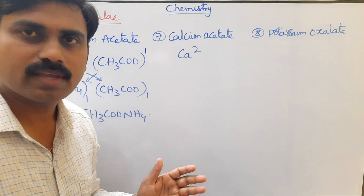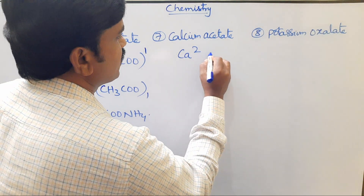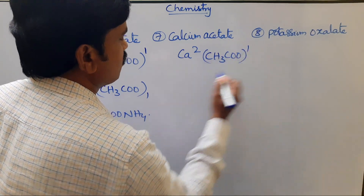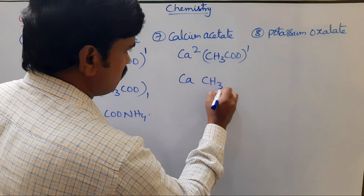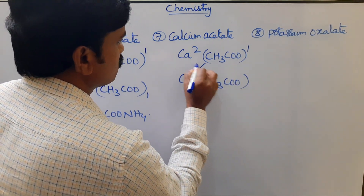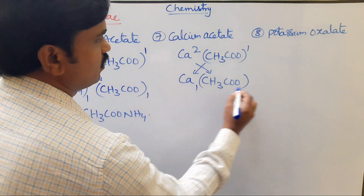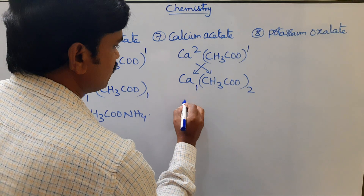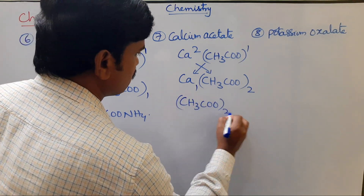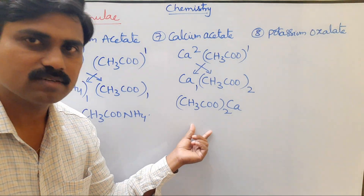Calcium acetate: calcium is a di-positively charged ion with charge 2, and acetate ion CH₃COO⁻ has charge 1. Criss-crossing: 1 transfers to calcium and 2 transfers to acetate. The formula for calcium acetate is Ca(CH₃COO)₂.